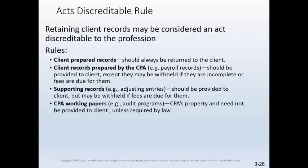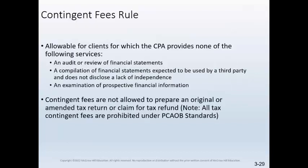The acts discreditable rule gives the AICPA the authority to discipline those members who act in a manner damaging to the reputation of the profession. The three bulleted circumstances outlined in the integrity and objectivity rule relating to misleading entries in financial statements are considered discreditable. Other rules cover client records, CPA-prepared records, CPA work products, and CPA working papers, and when they should be returned or provided to the client. CPA working papers prepared solely for the engagement, whether prepared by the client or the auditors, need not be provided to the client.